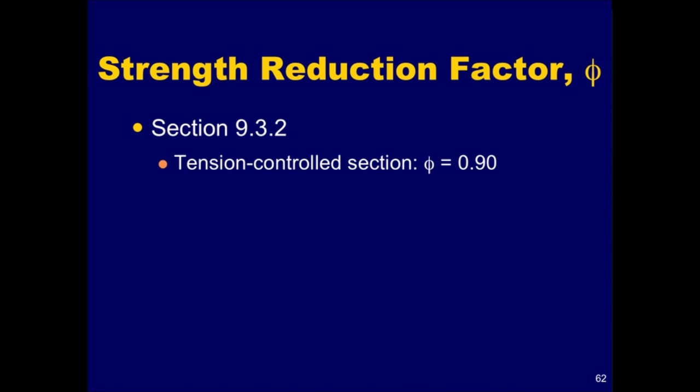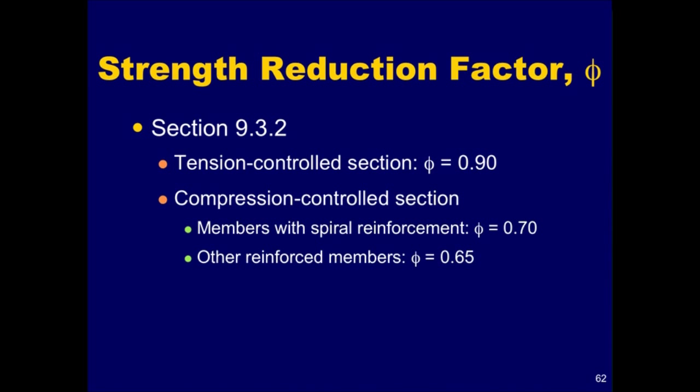For tension-controlled sections, phi is equal to 0.9. The strength of tension-controlled sections is clearly controlled by the strength of the reinforcement, which is less variable than the strength of the concrete. The phi factor for compression-controlled sections depends on the type of lateral reinforcement that is confining the longitudinal reinforcement. Members with spiral reinforcement conforming to section 10.9.3 are assigned a phi factor equal to 0.70, while all other reinforced members are assigned a lower value of 0.65. Members with spiral reinforcement have greater ductility, or toughness, which is reflected in the greater phi factor. In general, phi factors for compression-controlled sections are smaller than those for tension-controlled sections, since they have less ductility and are more sensitive to variations in concrete strength.